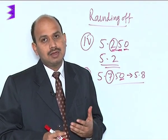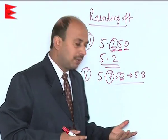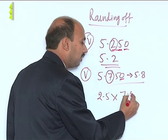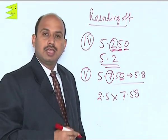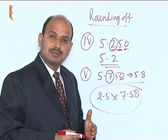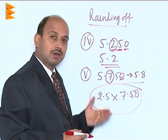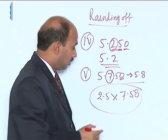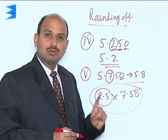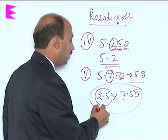For example, suppose you are multiplying 2.5 by 7.58. When you write the result, it must have the minimum number of significant figures among the numbers being multiplied. Here 2.5 has only 2 significant figures, so the result must also have 2 significant figures.